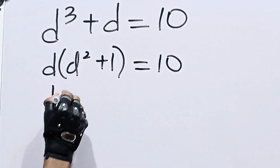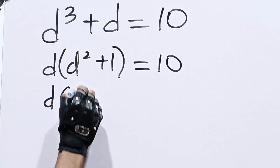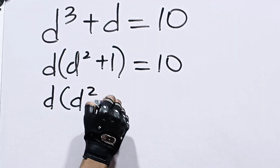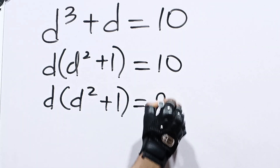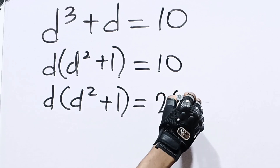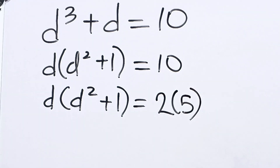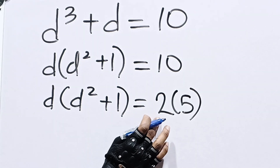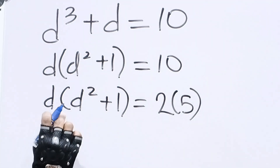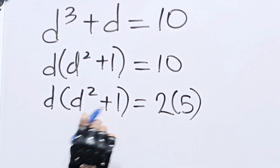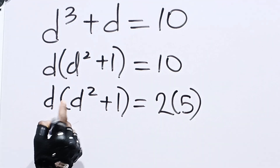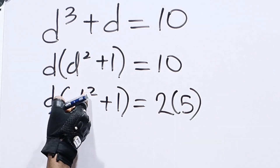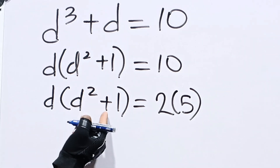We have d times d squared plus 1 is equal to 2 times 5, or 5 times 2. Looking at this, let's say d is equal to 2. If d is 2, then d squared is 4, plus 1 gives us 5. So that checks out.